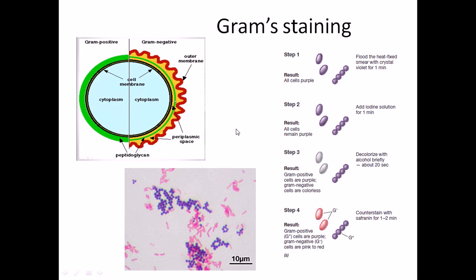The procedure starts by making a smear of bacteria on a slide, heat-fixing it, then adding the first stain — crystal violet — and letting it sit for one minute. After that, the second stage involves adding iodine solution. The iodine forms a complex with crystal violet, creating a crystal violet-iodine complex. This complex remains in the cell and everything stays purple at this point.